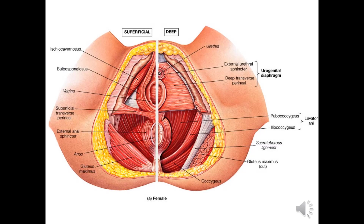On this diagram: the urethra, external urethral sphincter, urogenital diaphragm, vagina, external anal sphincter, and anus are labeled.